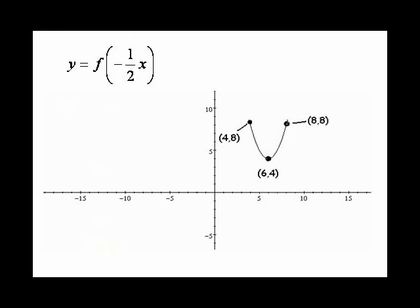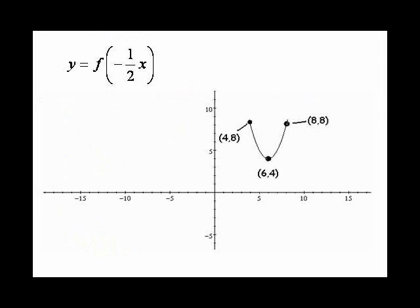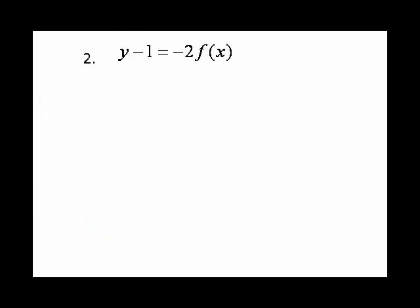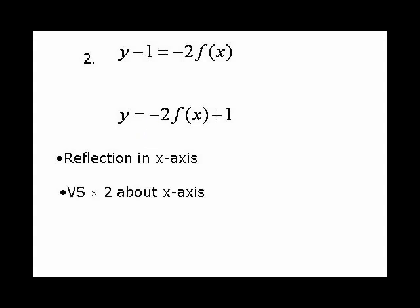Let's do one more with this one. Here, we have y - 1 equals -2f(x). As before, I will isolate the y, giving me this. You will always want to identify the transformations. We do have a reflection in the x-axis. We do have a vertical stretch by a factor of 2 about the x-axis. Then we have a vertical translation of 1 unit up. In that order, I'm going to tackle the curve.